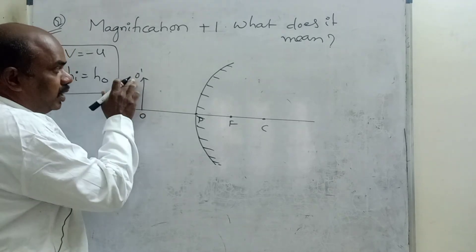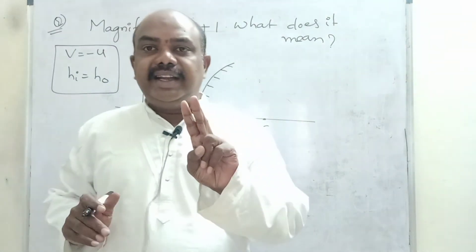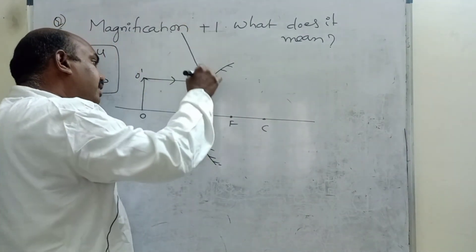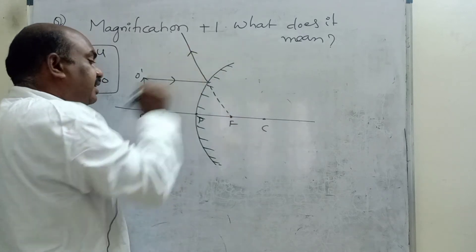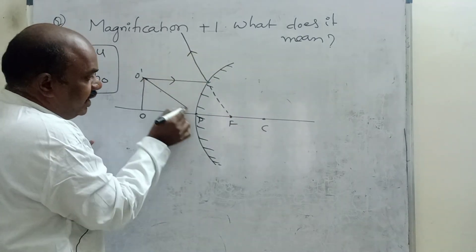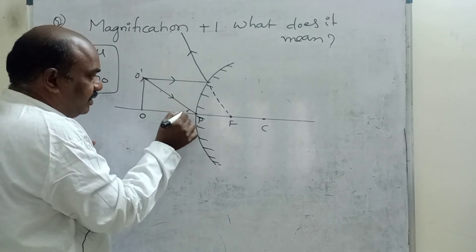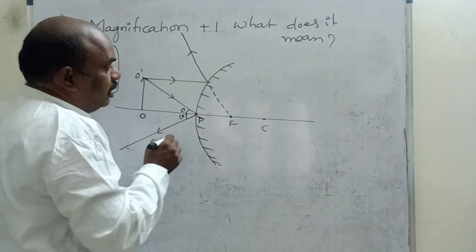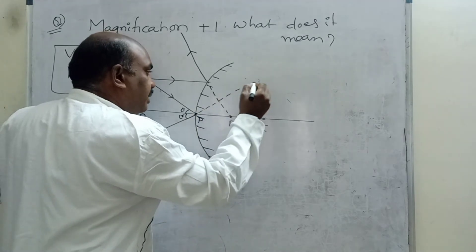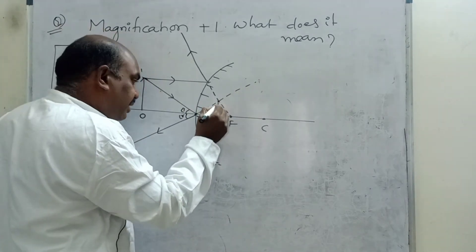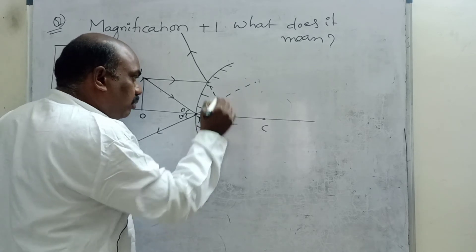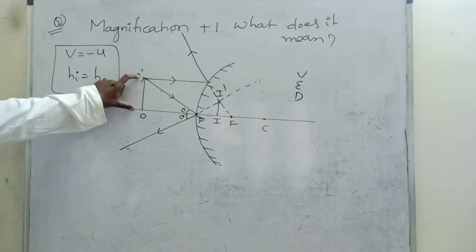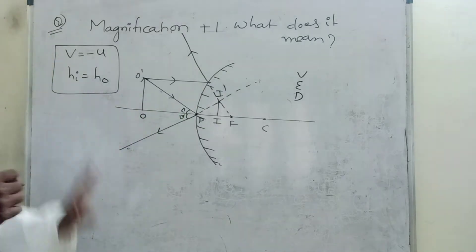For a convex mirror, the object O, O dash is placed on the reflecting side. Using two incident rays to draw the ray diagram: a parallel incident ray after reflection diverges and seems to meet at focus — it is a diverging mirror. An incident ray at the pole reflects at the same angle. The image forms at the intersection point. This gives a virtual, erect, diminished image. Object height is greater, image height is smaller — second condition is not satisfied.